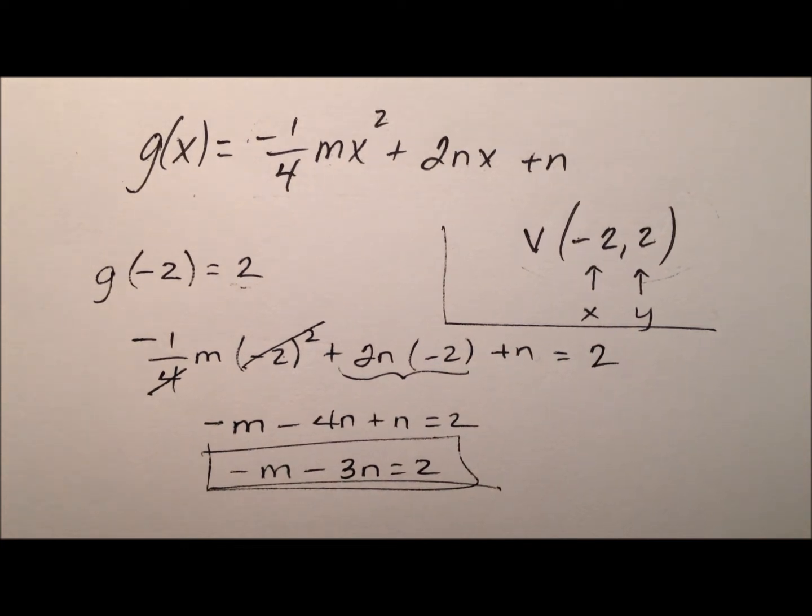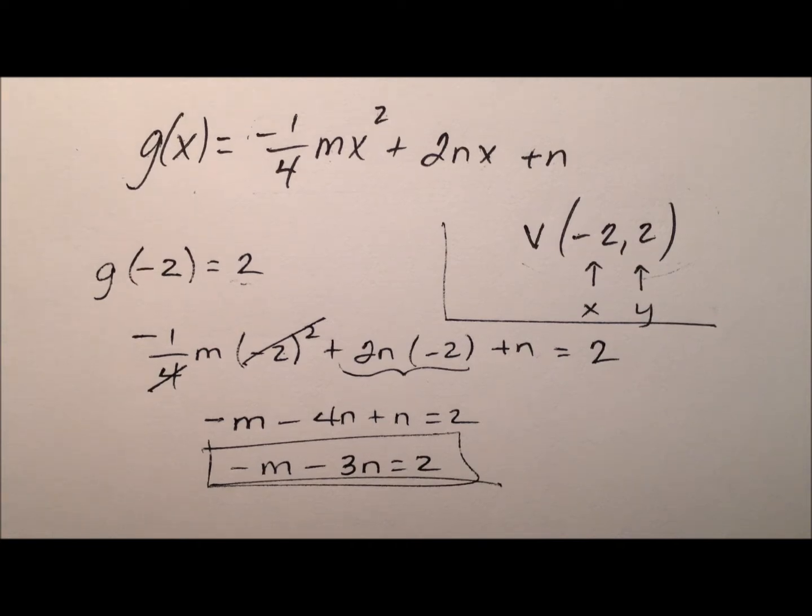But that's only one piece of information that we're using because we have one equation but still two variables, m and n. So, we're going to have to use some other piece of information, some other relationship that exists so we can go ahead and finish getting these values for m and n.